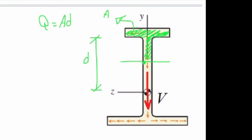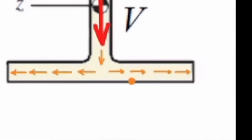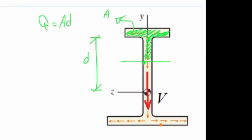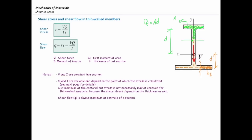Now, what would Q and T be if the point is located on the horizontal element — the flange? For thin-walled elements, we cut our section perpendicular to the direction of the element. So in this case, I cut my section vertically. The area would be the area of that hatched section, and D would be the distance of that hatched section from the centroid of the entire section.